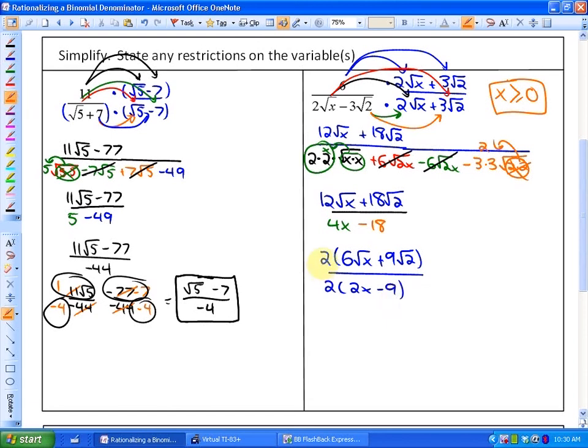So you can see that those 2's can, or have been factored out and can cancel out. So my simplest form is 6 root x plus 9 root 2 all over 2x minus 9. That's my simplest form, and you'll see that the denominators in both cases have been rationalized.